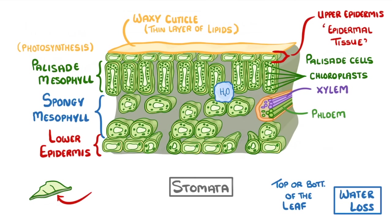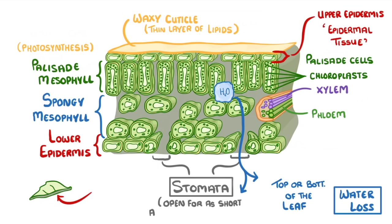When it comes to the bottom of the leaf, the main problem is the stomata, as water will diffuse out of any gaps very easily. The leaves need these holes though, so they can get the carbon dioxide that they need. As a compromise, the leaves keep their stomata open for as short a time as possible, so that they can maximise carbon dioxide absorption but minimise water loss.